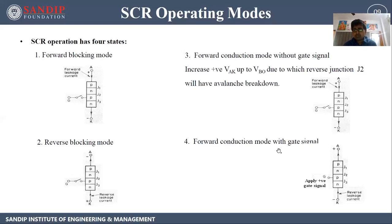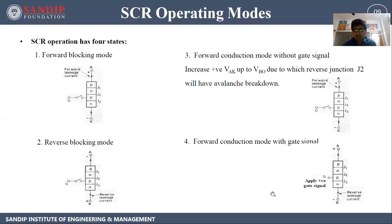The last is forward conduction mode with gate signal. The SCR has a third terminal which is the gate, and it is essential to provide supply across the gate terminal. Once we apply gate DC voltage, it produces gate current. Every SCR is designed to trigger at a particular gate current. Once the device receives that amount of gate current, the device gets triggered and turns ON.